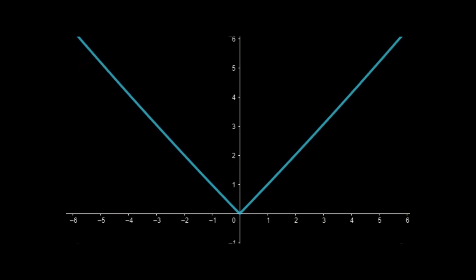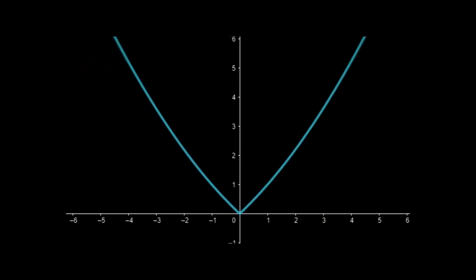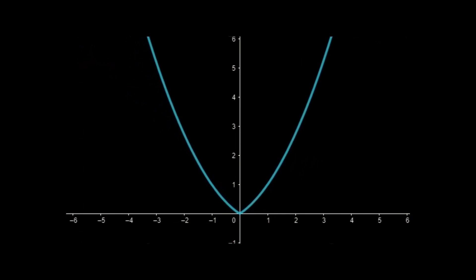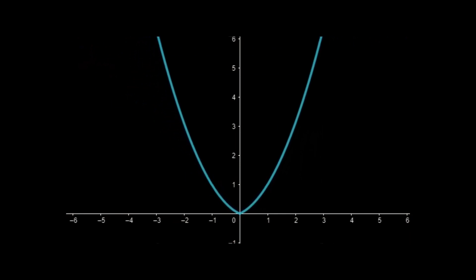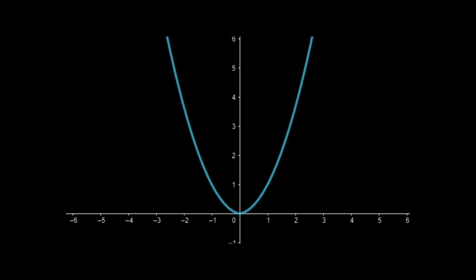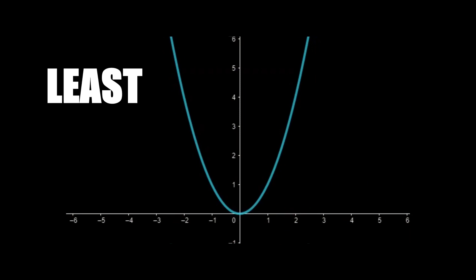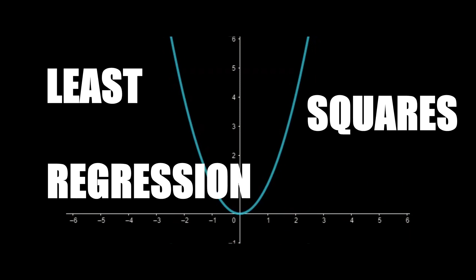The simple solution here is to square the residuals. A parabola is always positive like absolute value, but it's also differentiable and is a polynomial, making it easy to use within formulas. The fact that the differences are squared is the exact reason that this linear regression is called the least squares regression line, or LSRL. We are squaring each residual and adding them all up.